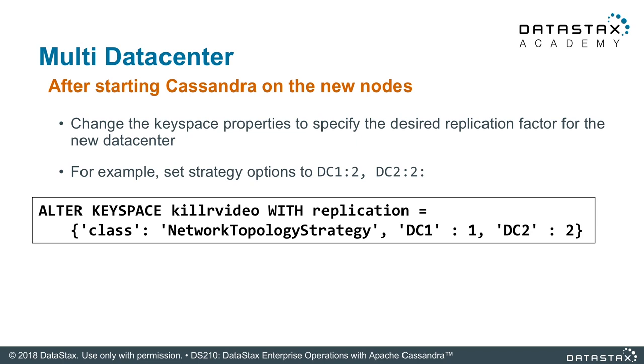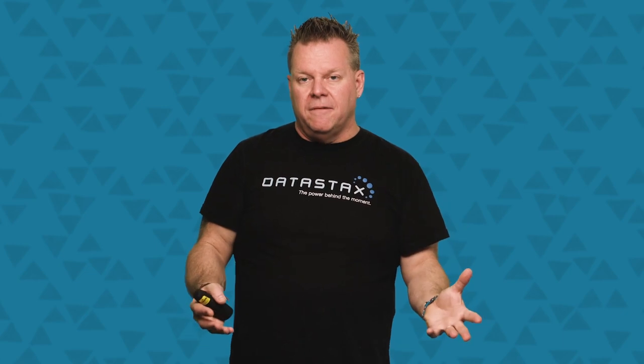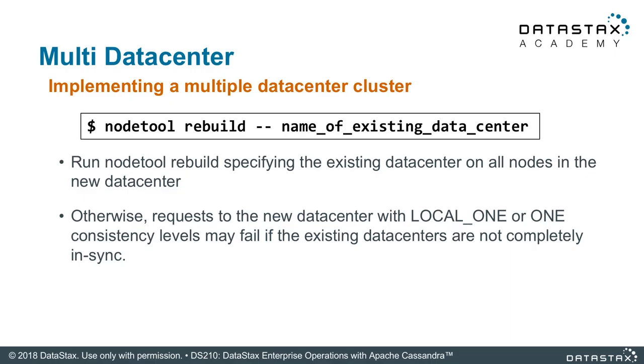Now it's ready to be running another data center. When you get ready to start the next data center, you bring up all those nodes without bootstrapping them — that's the key. Bring all of them online, have that data center ready with the proper configuration, meaning it's in the cluster but the nodes just have no data. The big thing that starts happening is when you run the nodetool rebuild command — that's when the data starts moving. Be prepared: this is when all that data starts moving across the WAN link, or if you're in a local data center, across the local links.